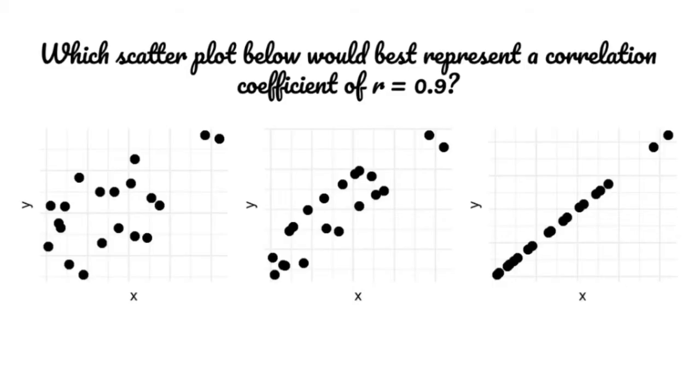Alright, a correlation coefficient is a number that tells you how strong or how weak a correlation is.